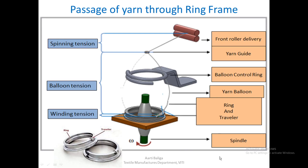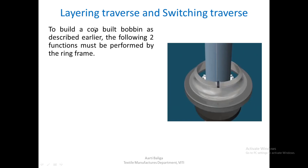The traveler is simply a small clip on the ring that rotates continuously for winding as well as twisting of the yarn. We shall now revise the layering traverse and the switching traverse — names given to the layers as they are being built up. Last time we saw the main layer and the cross layer; now we shall see how they are identified.